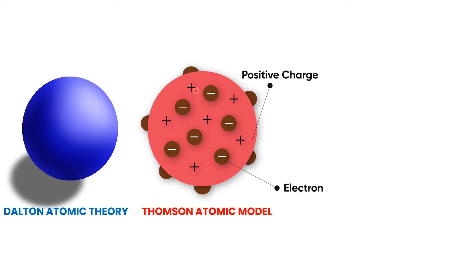The positive charge is uniformly distributed over the whole atom. Both the positive and negative charges cancel out each other, and due to this, the atom is neutral.